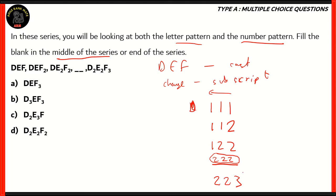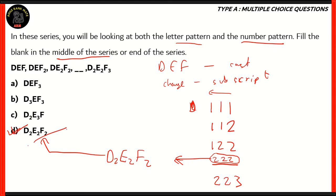Then the next series restarts with the rightmost again, giving 2-2-3. Therefore, the correct set of subscripts for the blank is 2-2-2. When you add that to D, E, and F respectively, you get D2E2F2 — which is option D. Option D is the right option. The pattern then continues: D2E2F3, then D2E3F3, and so on.